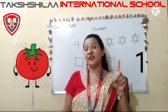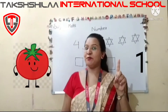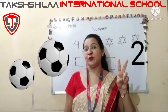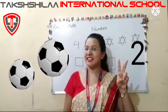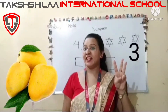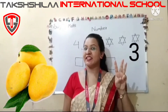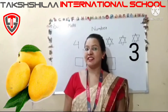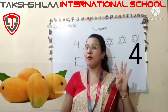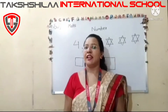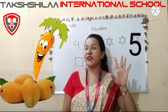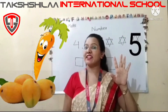Number one — one object. Number two — two objects. Number three — three objects. Number four — with four objects. Number five — with five objects.